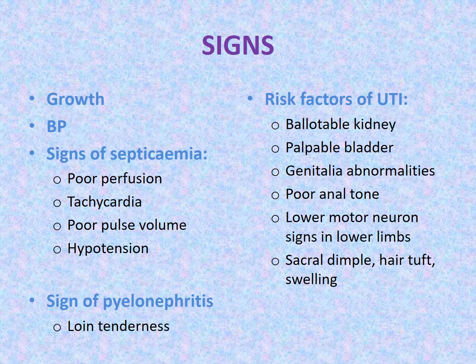Presence of loin tenderness suggests pyelonephritis. We also need to look for signs indicative of risk factors, including ballotable kidney due to hydronephrosis, palpable bladder due to urinary retention as in posterior urethral valve or neurogenic bladder, genitalia abnormalities which may be associated with urinary tract anomalies, poor anal tone and lower motor neuron signs in lower limbs as in spina bifida, and sacral dimple, hair tuft, or swelling over the lower spine indicating possible spina bifida occulta.